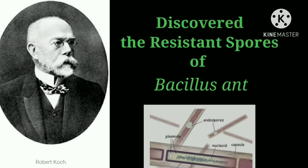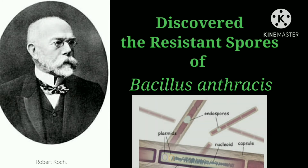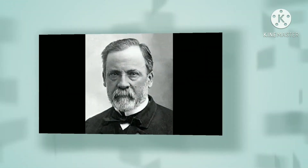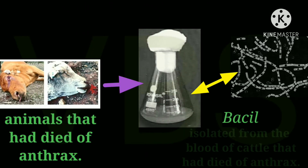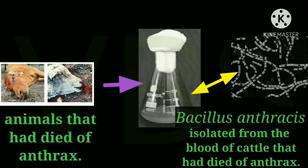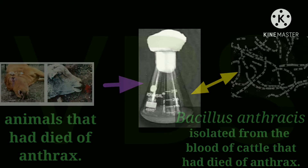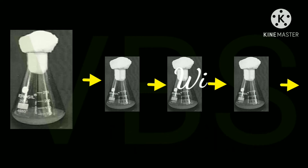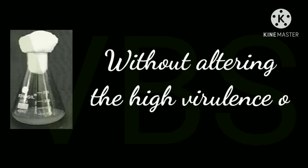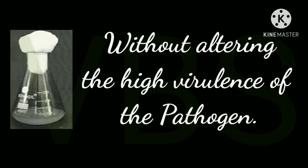Koch also discovered the resistant spores of this bacterium. Louis Pasteur grew the microbes in laboratory flasks after isolating them from the blood of animals that had died of the disease. Pasteur confirmed its causative role by subculturing this bacterium 100 times without altering the high virulence of the pathogen.